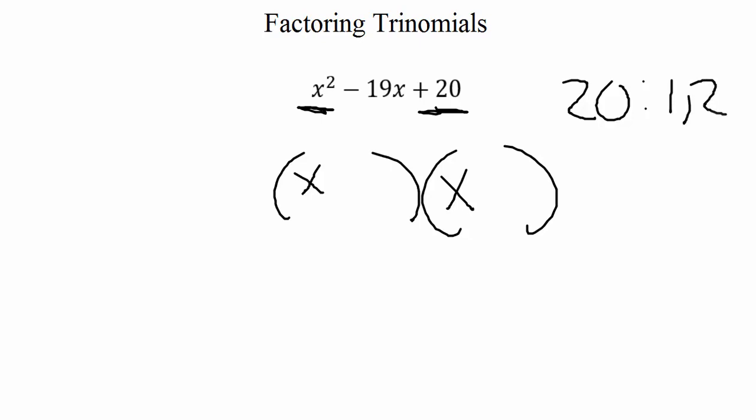And let's list them. 1 times 20 would give us 20. 2 times 10. Well, 3 times nothing would give us 20. A 4 times a 5 would give us 20. And those are all the possible combinations that would work. So here we have 3 different possible combinations that would multiply to give us 20.